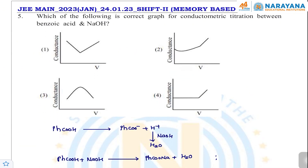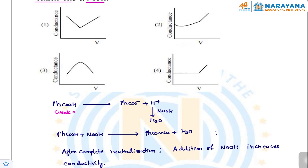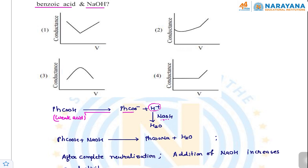The next question is on conductometric titration of benzoic acid with sodium hydroxide — what is the plot of conductance versus volume of NaOH added? Benzoic acid is a weak acid that dissociates slightly to give benzoate ion and H⁺. Initially, as NaOH is added, the H⁺ ions (which have the highest conductivity in aqueous solution) are neutralized. Due to this consumption of H⁺ ions, conductivity decreases slightly at first.